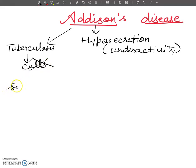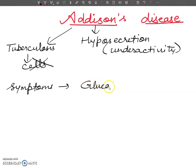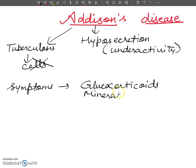The symptoms of Addison's disease: Glucocorticoids and Mineralocorticoids are two hormones which are secreted from the adrenal cortex. In Addison's disease, both Glucocorticoids and Mineralocorticoids are deficient — their levels are down.